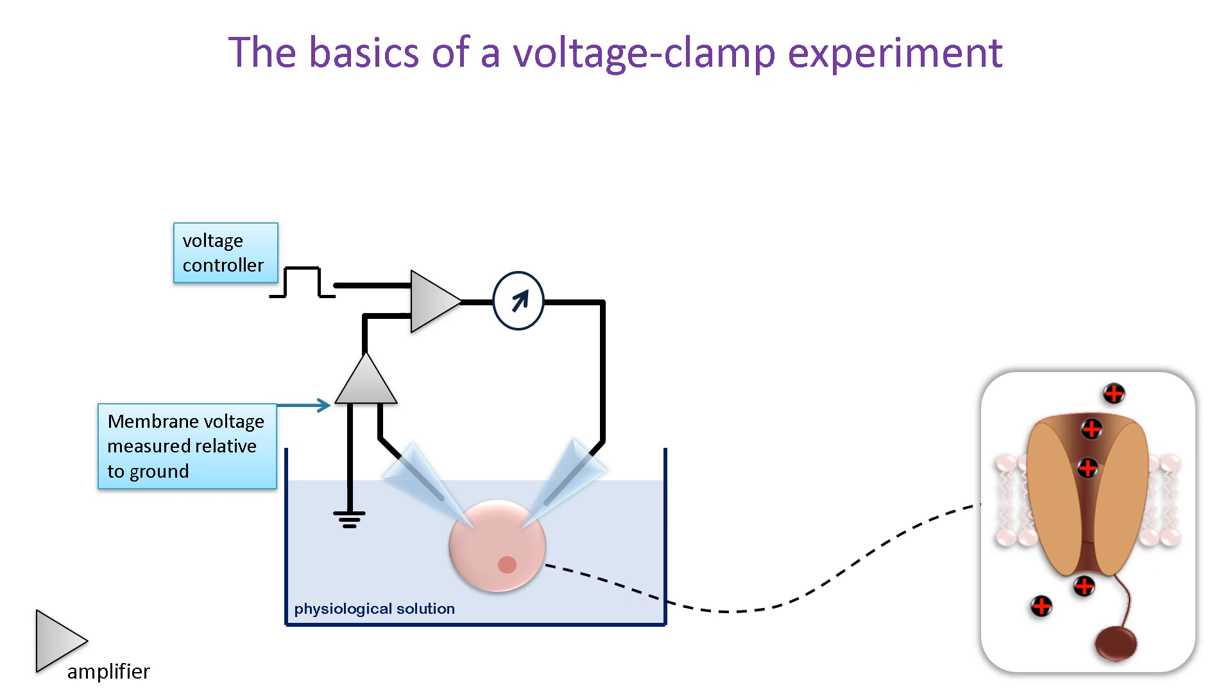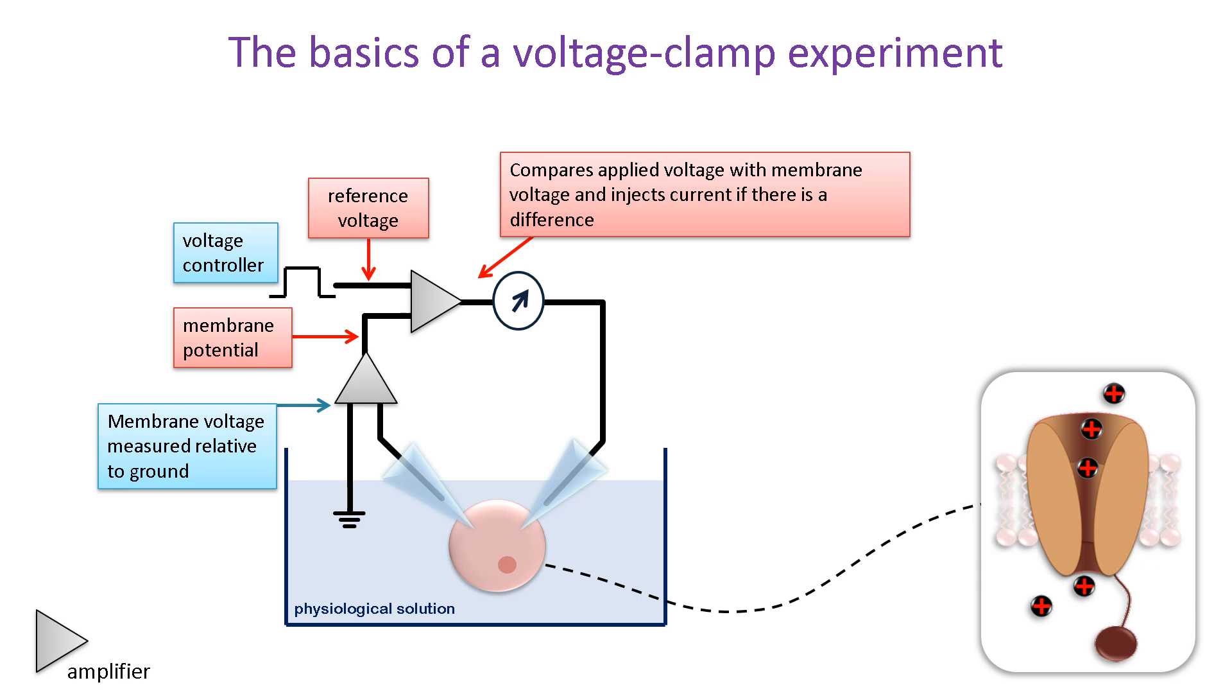The output of the amplifier measures the membrane potential and is fed into a second amplifier. It compares the measured membrane potential with a reference voltage at which the membrane is to be clamped. Its output is proportional to the difference between the two values. So, when the membrane potential equals the reference voltage, the output is zero. When ion channels open and pass current, it induces the membrane potential to change, causing the amplifier to emit current to bring the difference back to zero. Its output current is fed back into the cell via a second electrode to recover the membrane potential to the reference value.